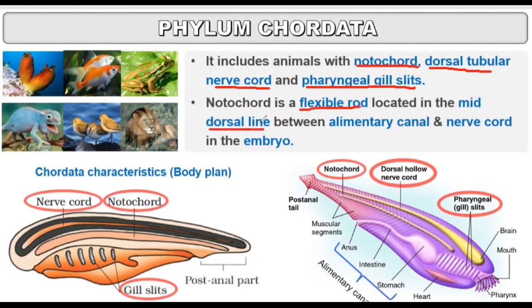Notochord is a flexible rod located in the mid-dorsal line between the alimentary canal and the nerve cord in the embryo. In the embryo, the alimentary canal is present on one side, and the dorsal hollow nerve cord is present on the other side.